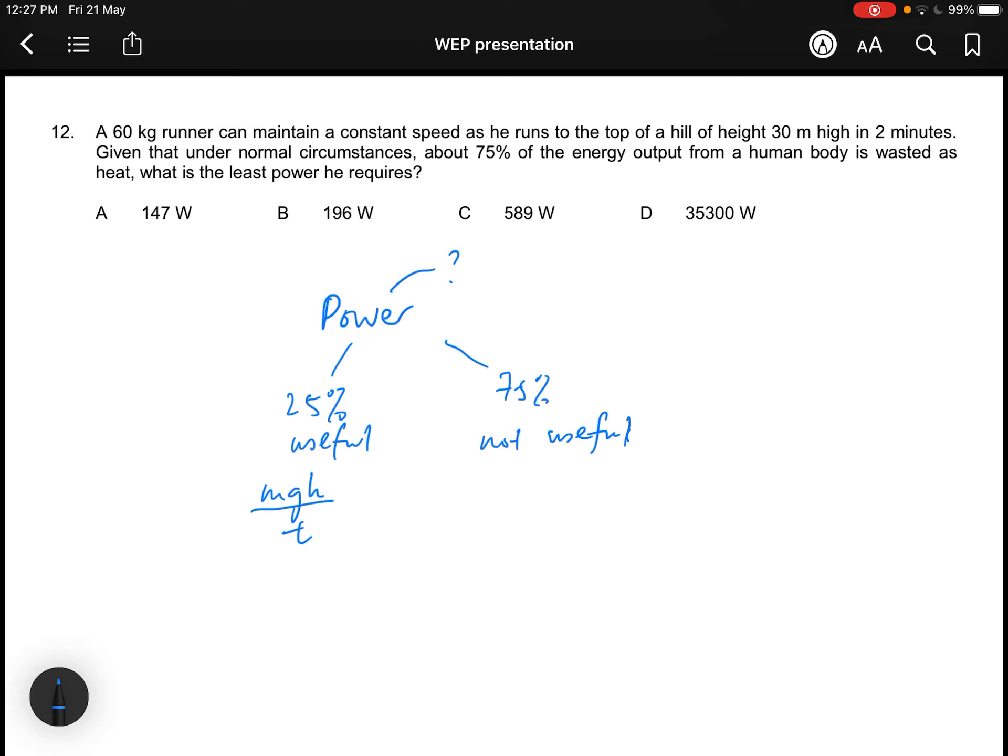We find mgh over time equals 60 times 9.81 times 30 divided by 120. Taking this amount and multiplying by 4, because we're looking for 100%, that will give you option C.